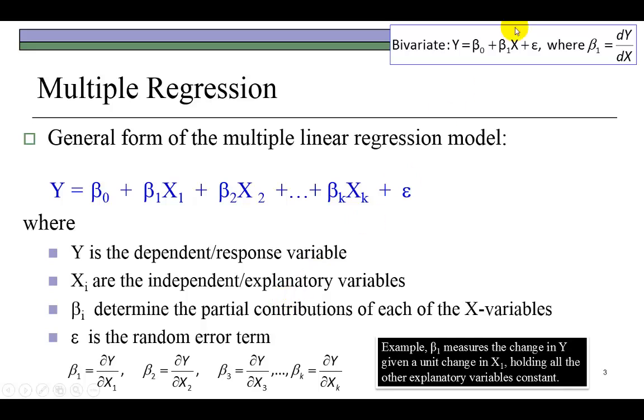Now, compare this to the two-variable model, which is also called a bivariate model. So this is the simple linear regression model, which we learned earlier.